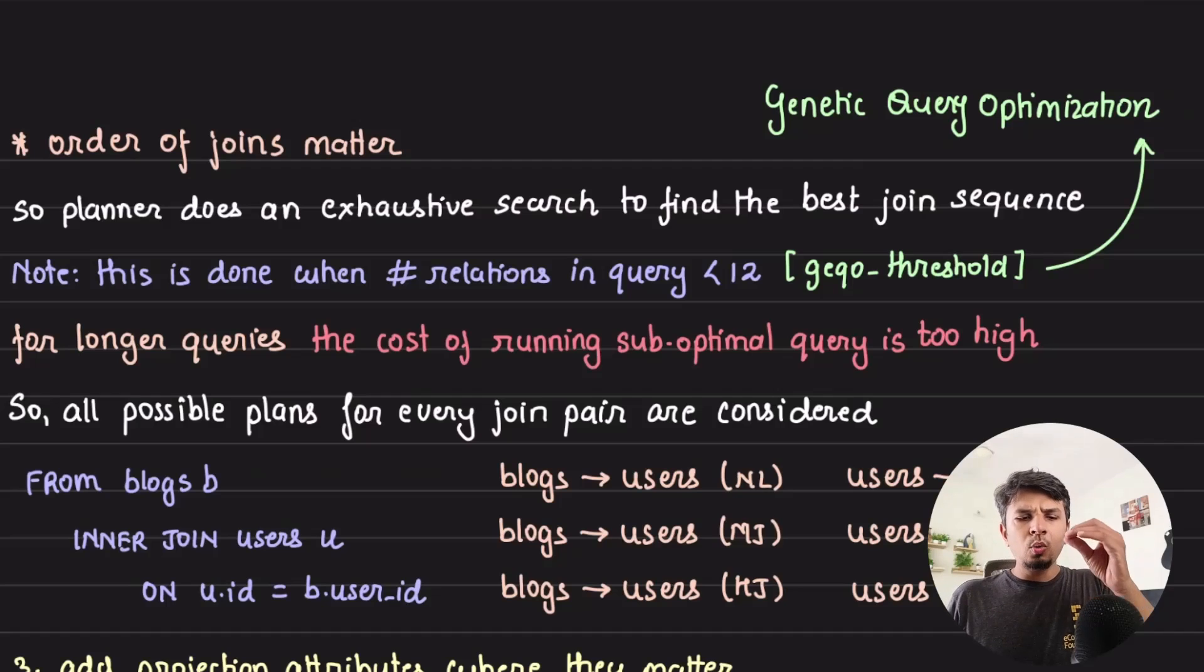What the planner does in case of Postgres—now I'll go slightly specific to Postgres—a planner typically does an exhaustive search to find the best join sequence. For example, if I'm joining two tables, table A and table B, then I can join A with B or B with A. Both would lead to the same result, but the effective time it would take to join the two tables would depend on the join order sequence.